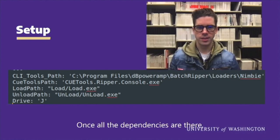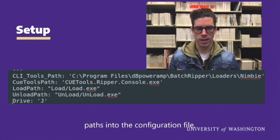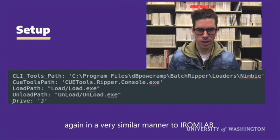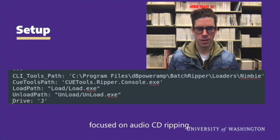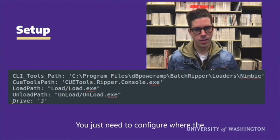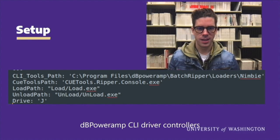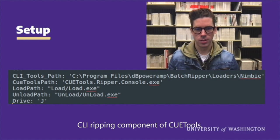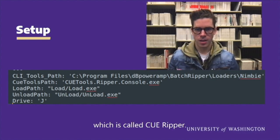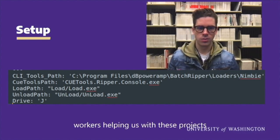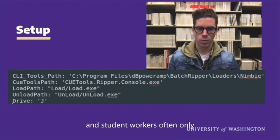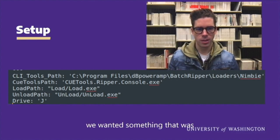Once all the dependencies are in place, the only setup required to run the tool is to plug in dependency paths into the configuration file, in a very similar manner to IRM Lab. Since our tool is only focused on audio CD ripping, you just need to configure where the dBpoweramp CLI NimBie driver controllers are, as well as the path to calling the CLI ripping component of Qtools, which is called Qripper. This simplicity is by design, as we envision having student workers helping us with these projects, and since they often only remain with us for short periods, we wanted something that was relatively set-and-forget in terms of its options and setup.